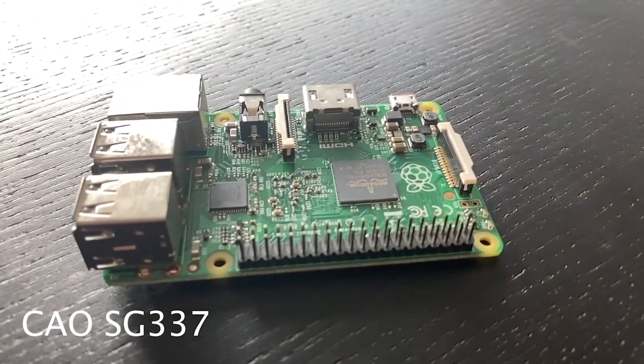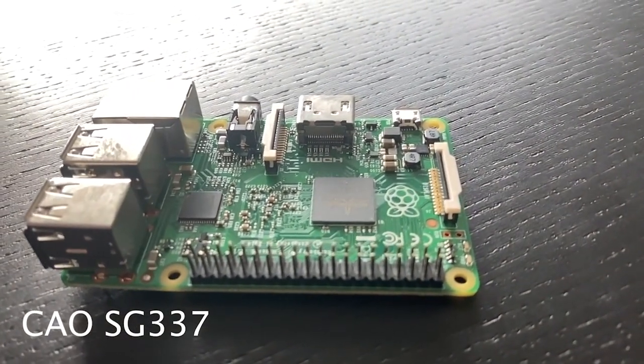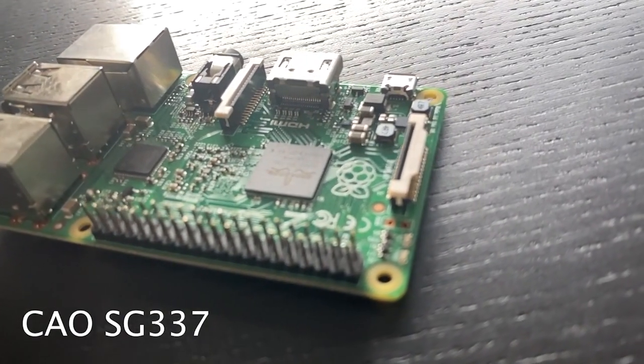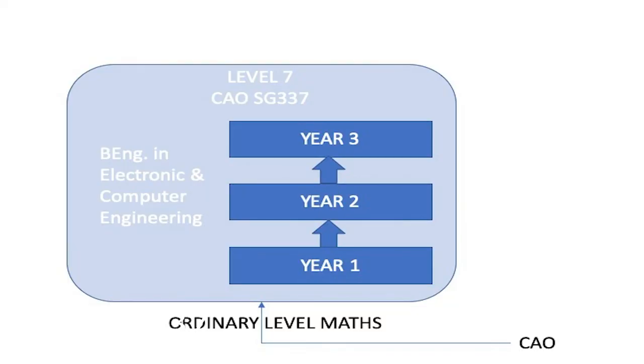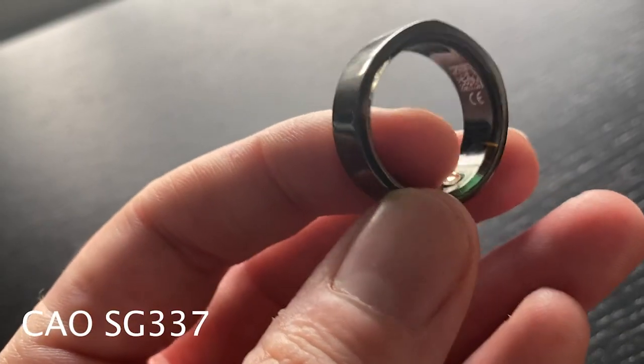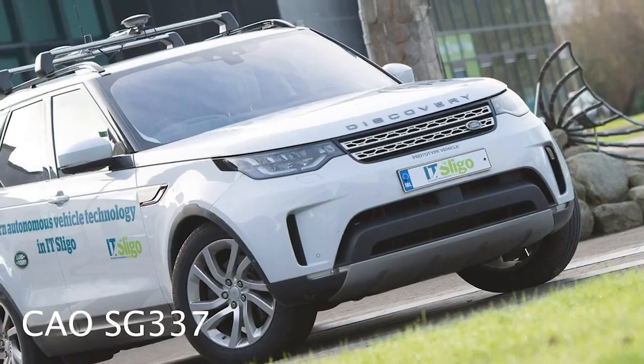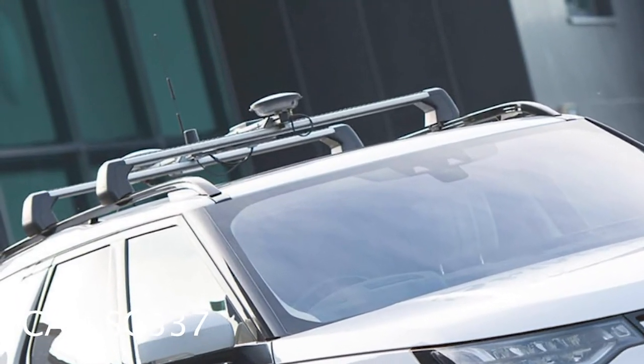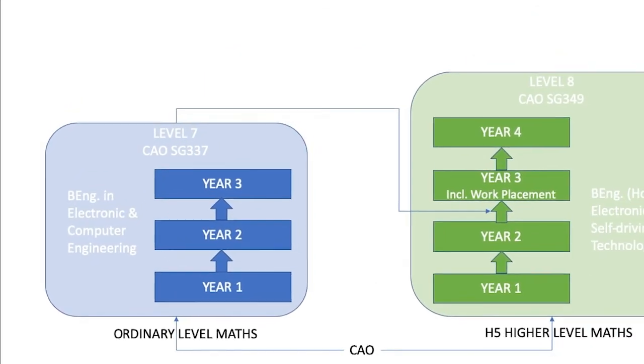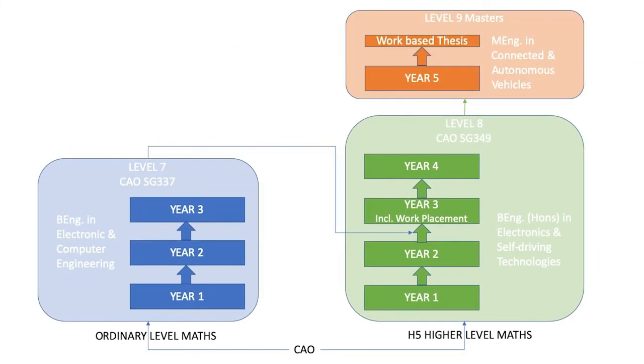If you are interested in technology or engineering, but are not doing higher level maths, why not consider our level 7 in electronic and computer engineering? This is a three year program that looks at the design and development of embedded electronic systems. These are the medical devices that keeps us healthy, the consumer devices that keeps us entertained, or the controlled systems that keeps us safe on the road. You can then progress onto the level 8 in electronics and self-driving technologies, and from there to the masters. Check out the link below for more information.